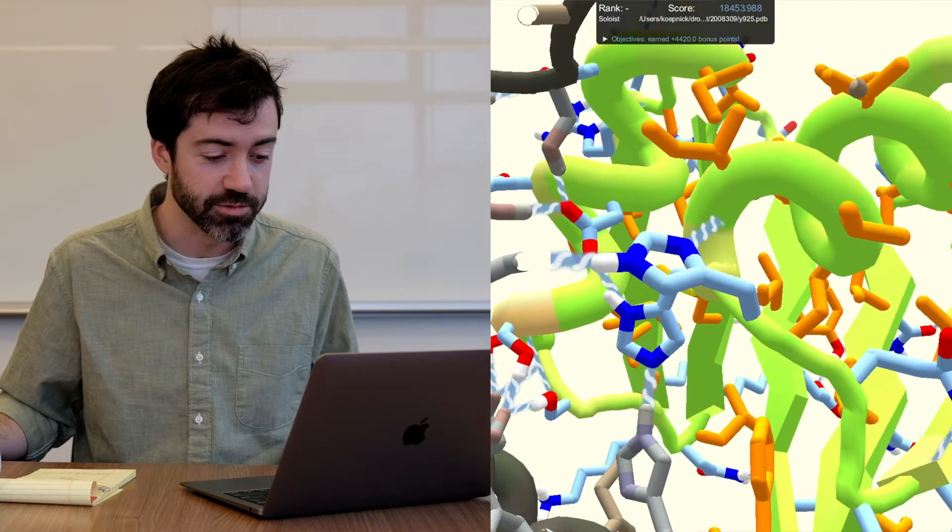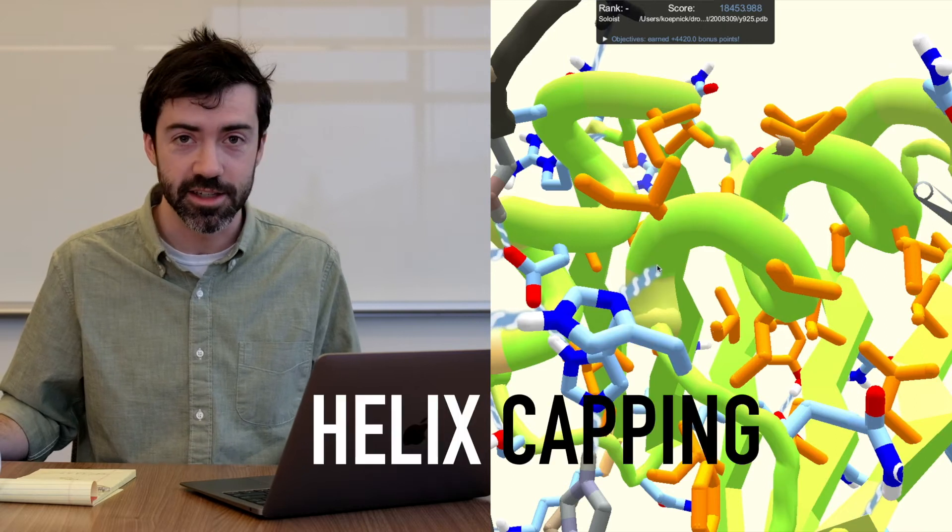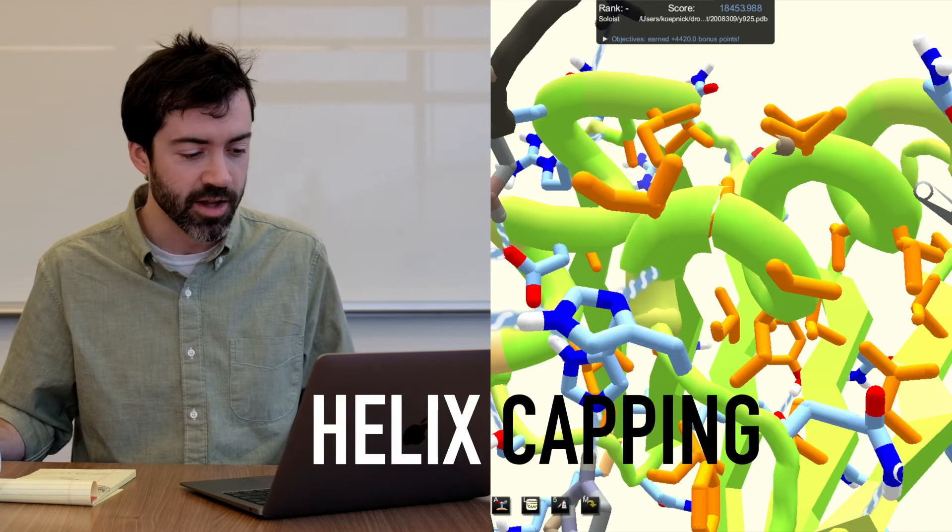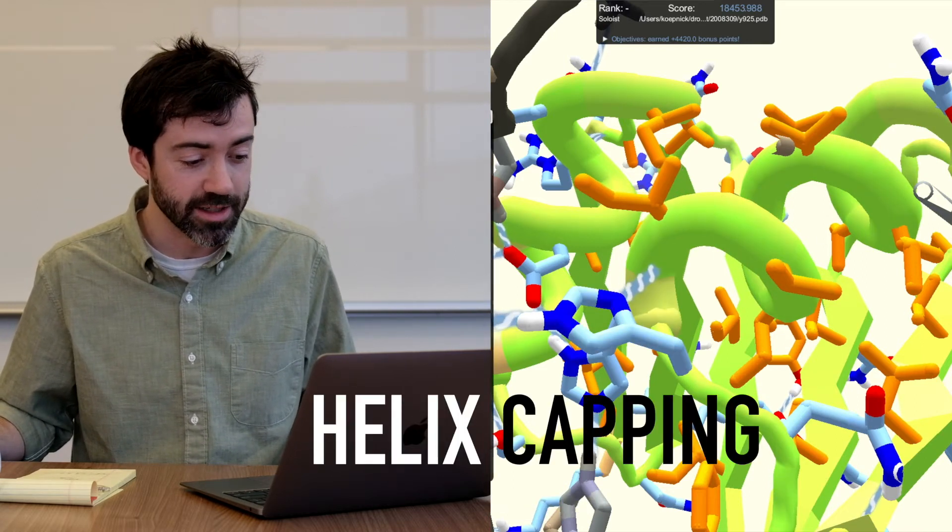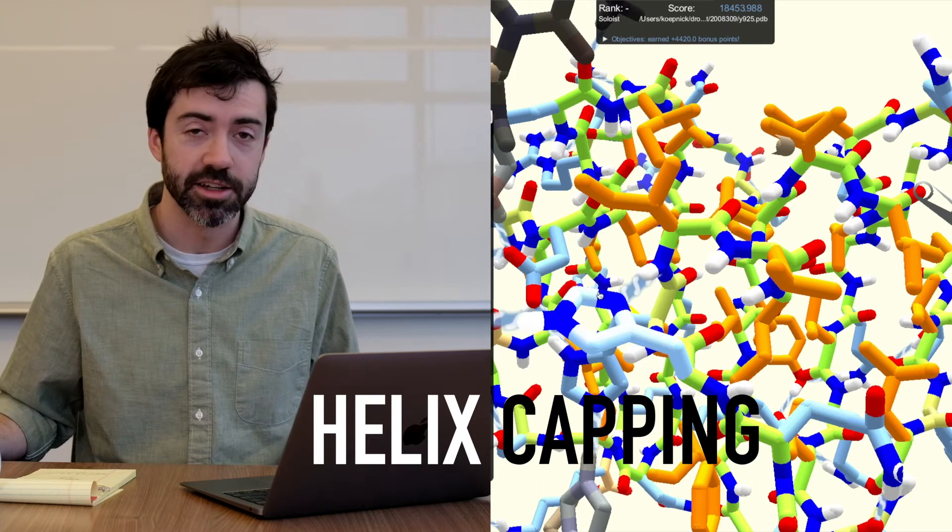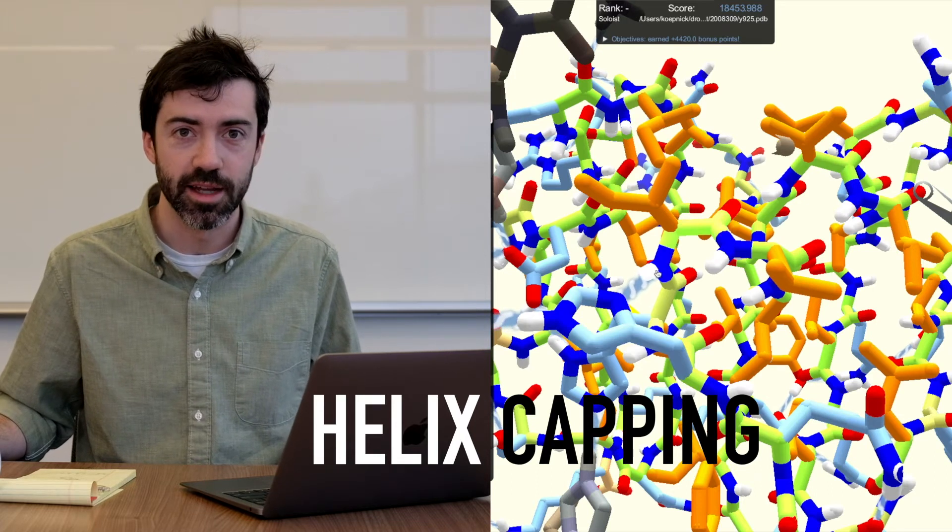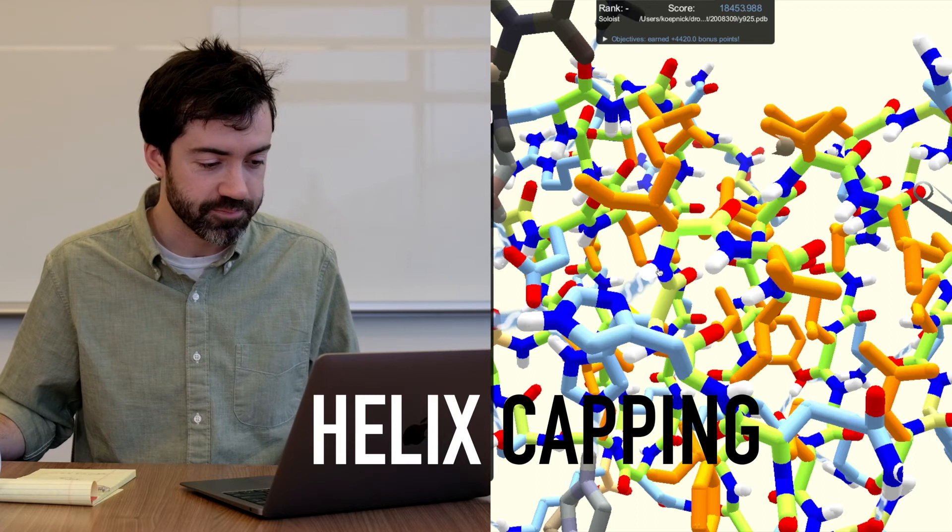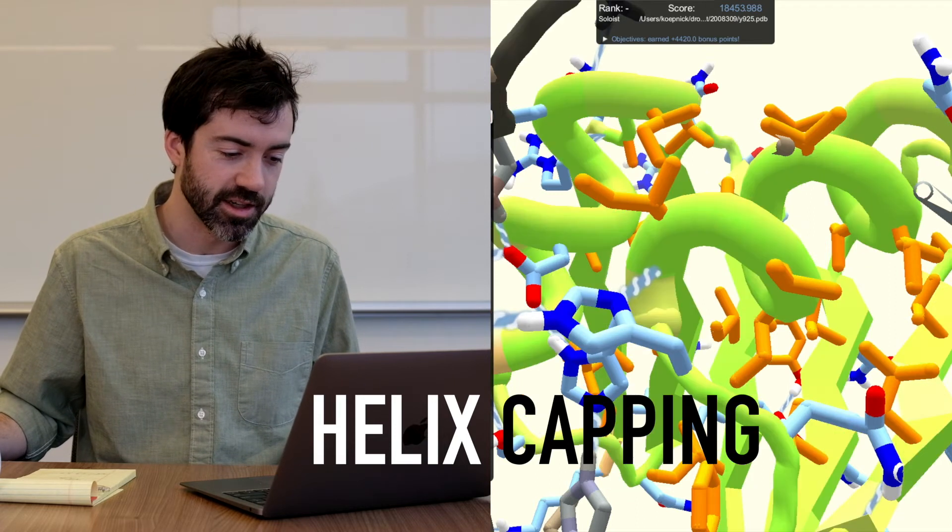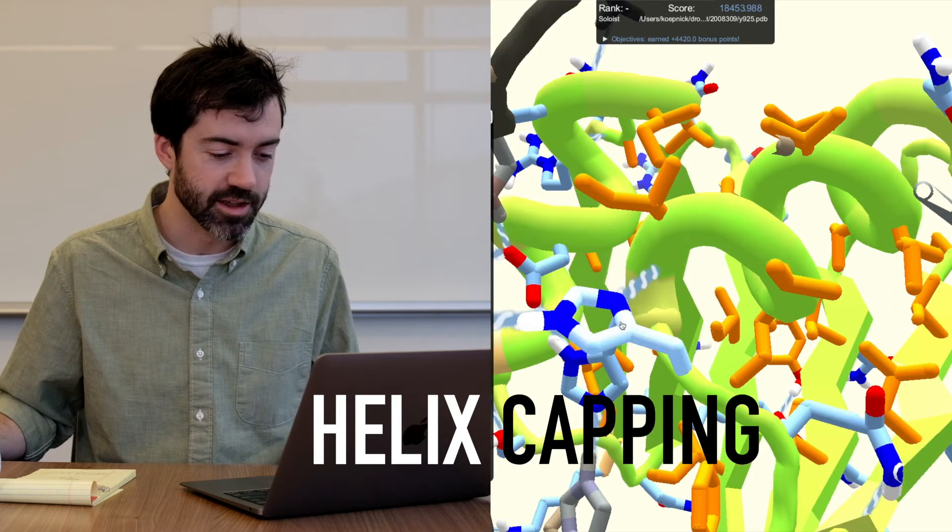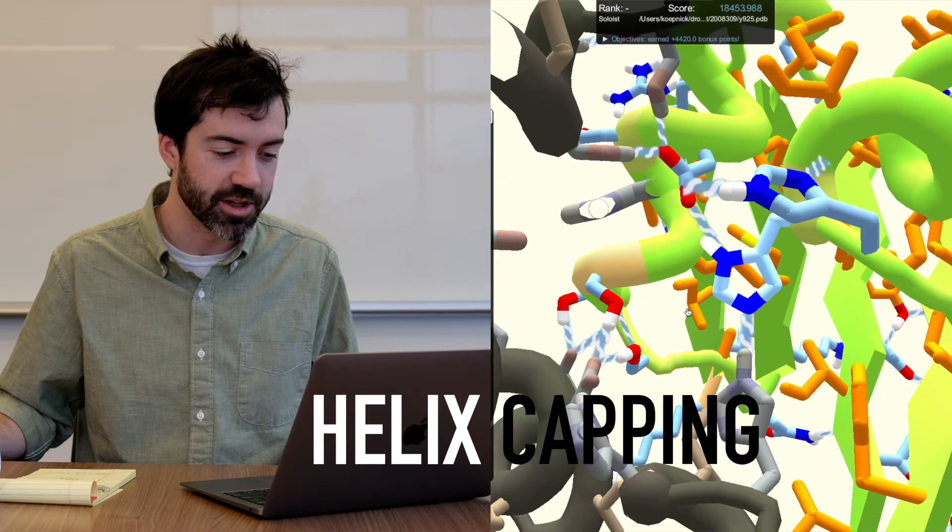And this is a nice interaction we don't talk about much in Foldit, called helix capping, where a residue side chain makes a hydrogen bond with a backbone atom at the end of the helix. So this is great. This means that this histidine will be well placed to make the rest of these hydrogen bonds and finish up the network.